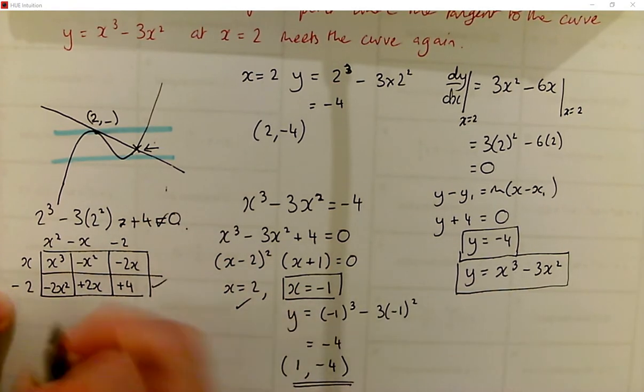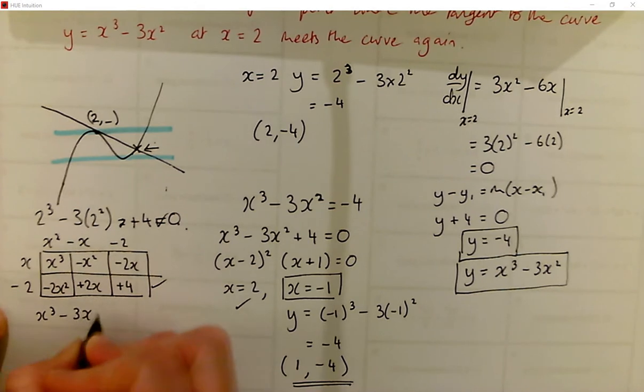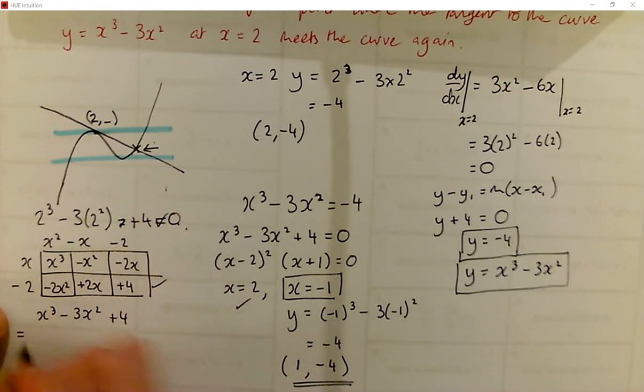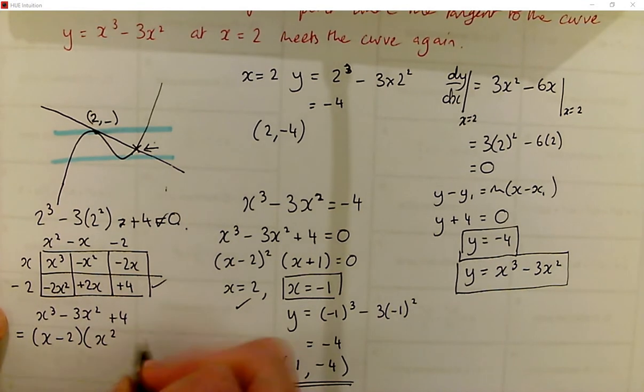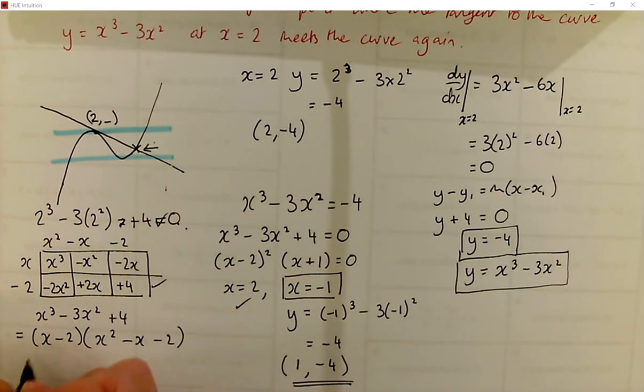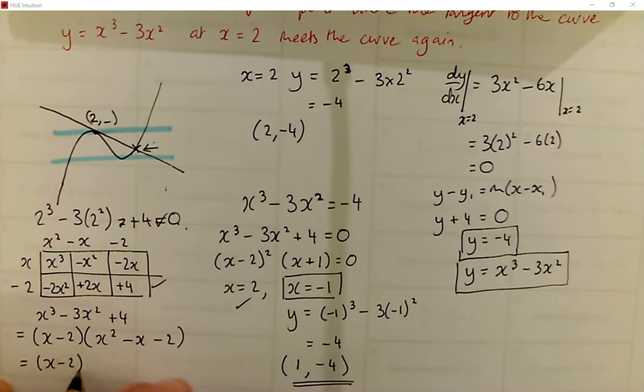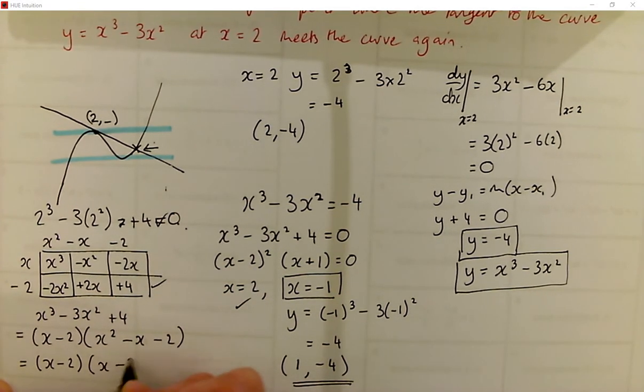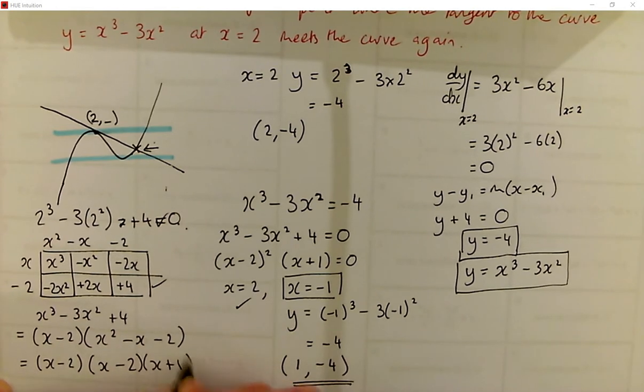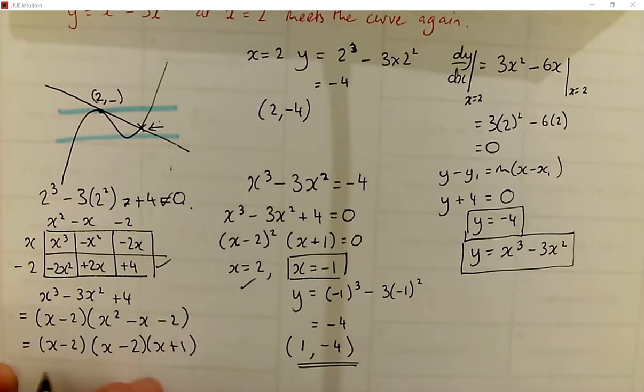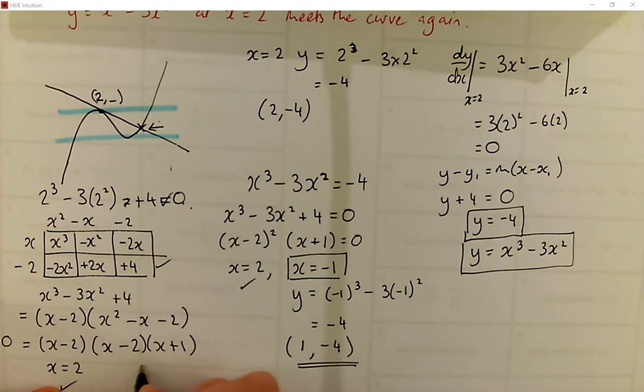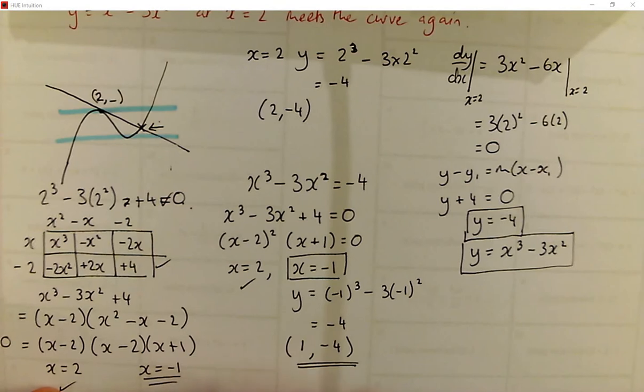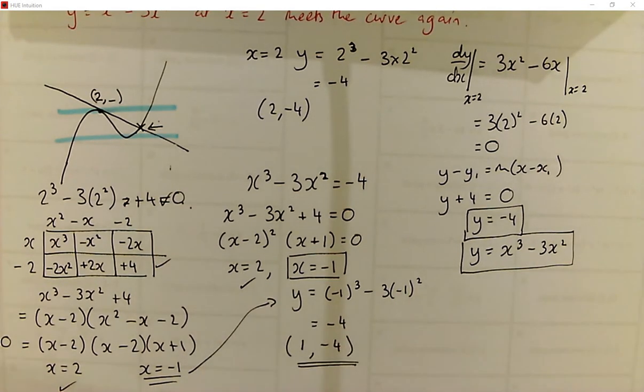So that's sorted. So that tells me that x cubed minus 3x squared plus 4 is the same as x minus 2 times by x squared minus x minus 2, from what we've just worked out. And then we've just got a quadratic to factorise, which is x minus 2, x plus 1. And then that gives us solutions. And that equals 0 of 2, which we've already used, and negative 1. And then we substitute it in to get the y-coordinate.